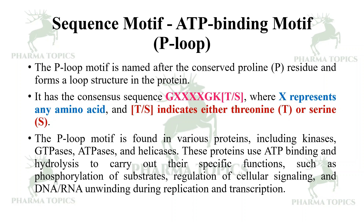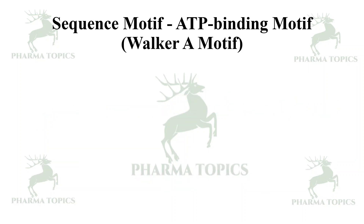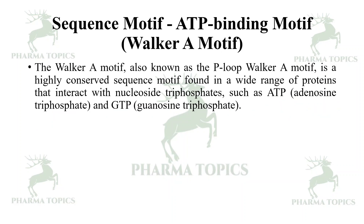The P-loop motif is found in various proteins including GTPases, ATPases, and helicases — proteins which use ATP binding and hydrolysis to carry out specific functions such as phosphorylation of substrates, cellular signaling, and DNA/RNA unwinding during replication and transcription.